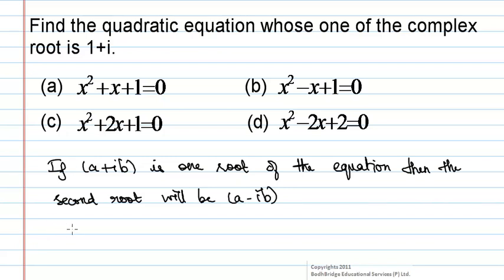It is given that one complex root, let it be α, is equal to 1+i. Therefore, the other root, β, is equal to 1-i.